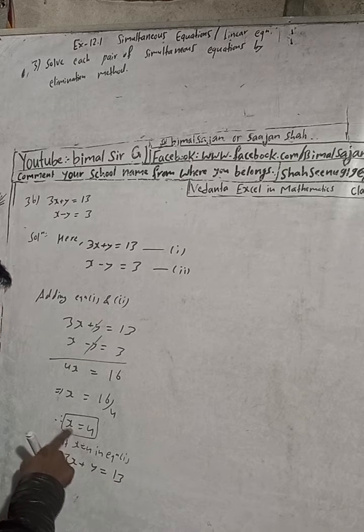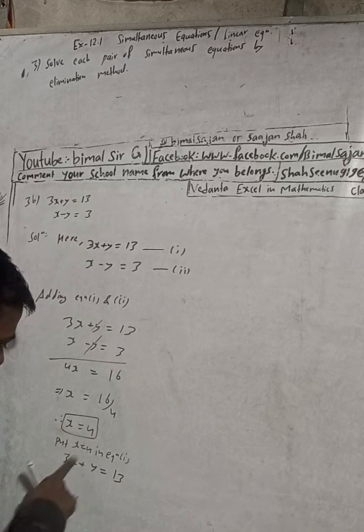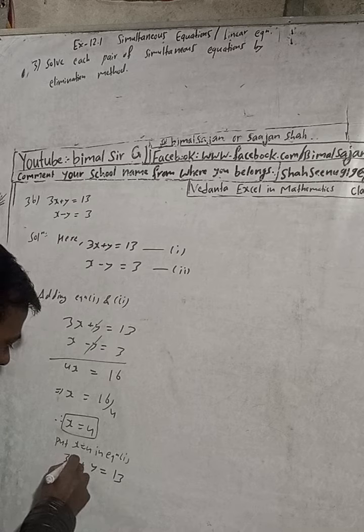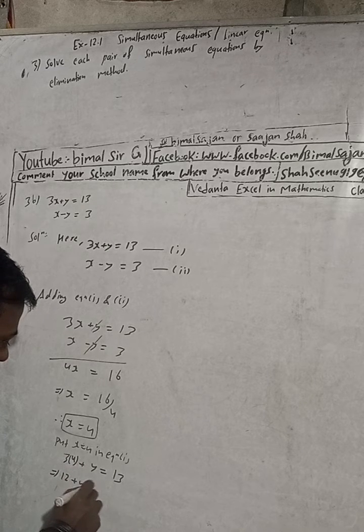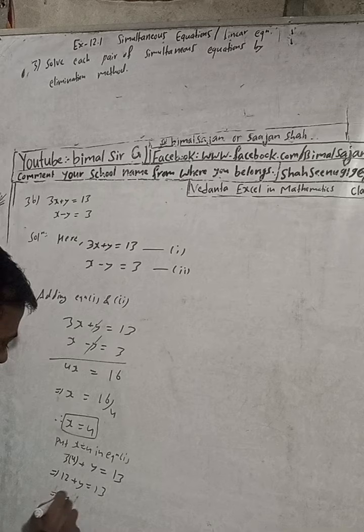Now in place of this x, we will put 4. So I will put here 4 in brackets. Or multiply: now this implies 4 times 3 is 12, plus y is equal to 13. This implies y is equal...